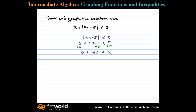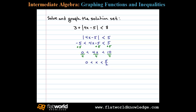Dividing by 4, we have our final answer: 0 is less than x, which is less than 5 halves. We can graph these solutions on a number line. For both the lower and upper bound, we'll use an open dot because of the strict inequalities.